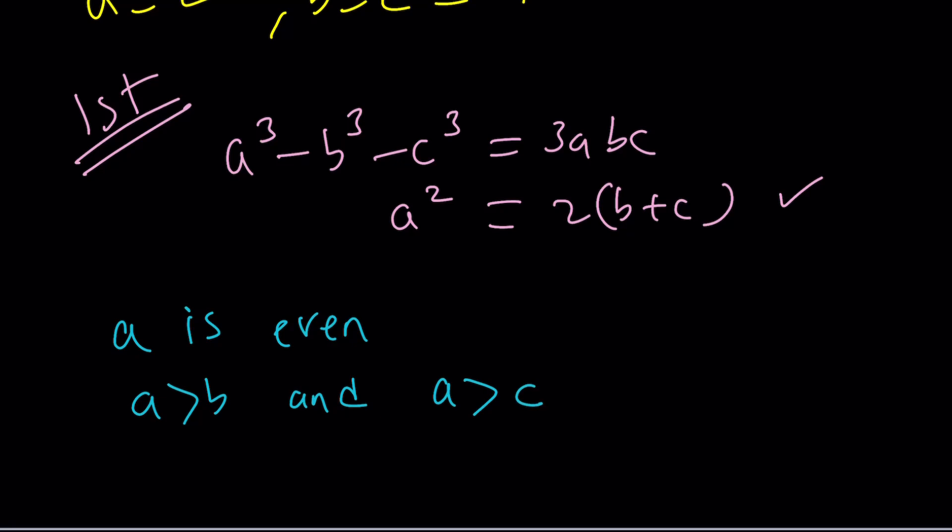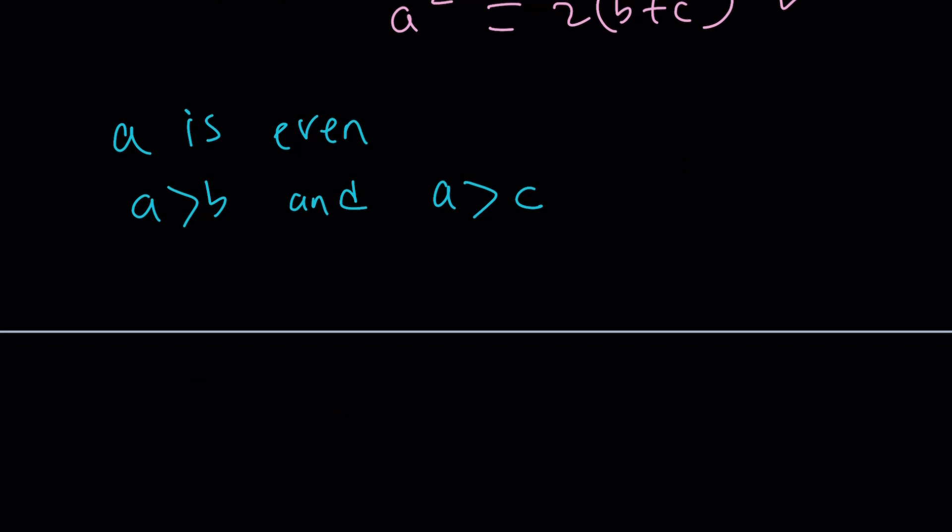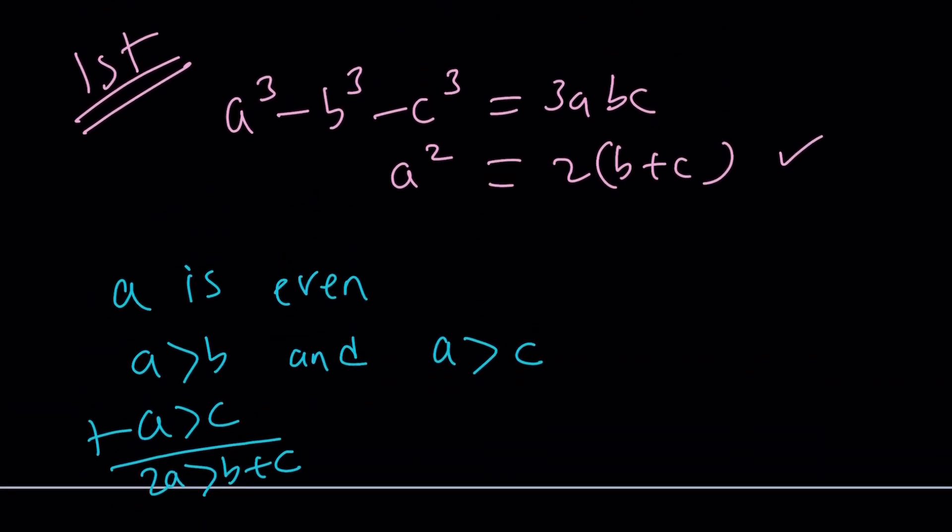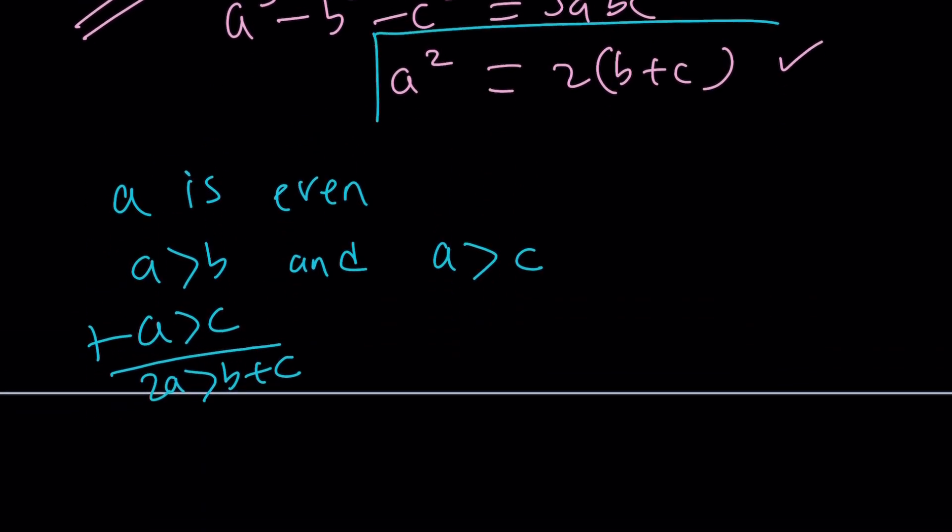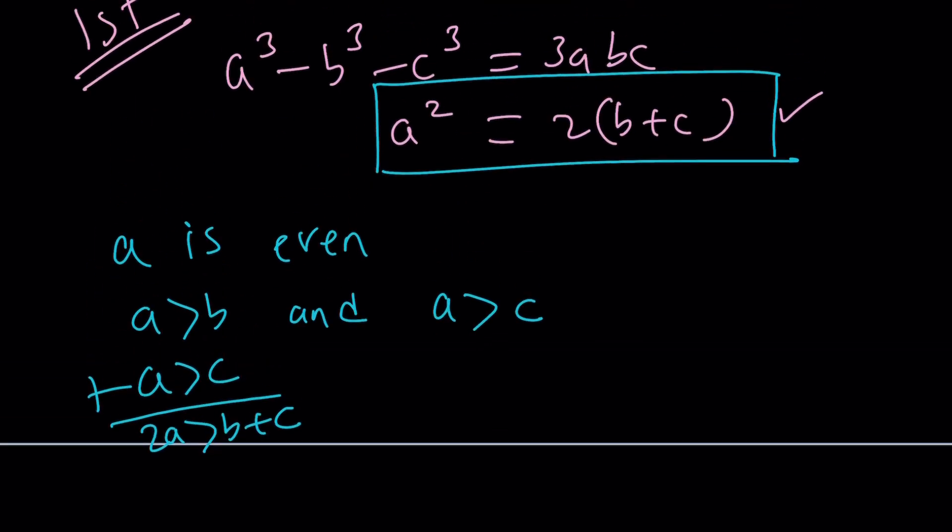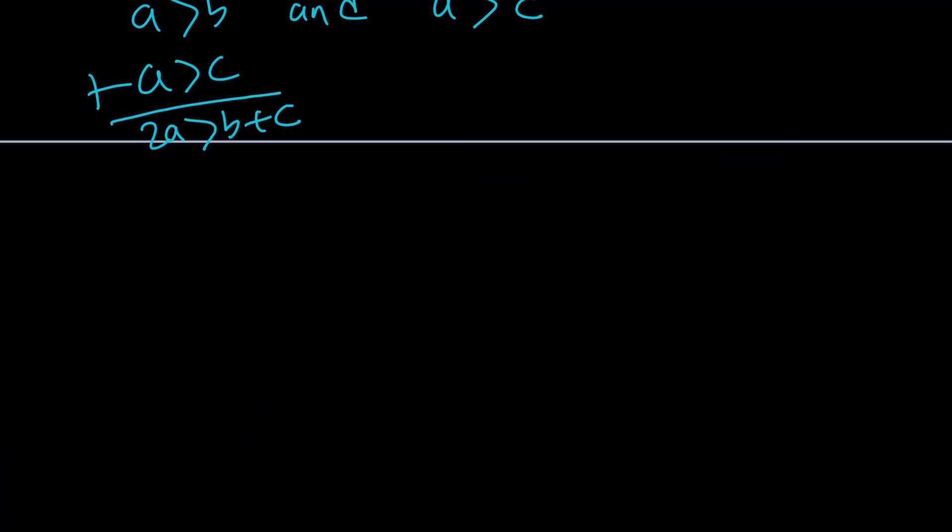And this is nice because if you put these two together and add them, this gives you 2a is greater than b plus c. That's interesting. What does that mean? How can I use that information? Here's what you can do. From the original equation, we can basically write half of a squared. And again, we used that idea before. Remember? Half of a squared is equal to b plus c. And b plus c is less than 2a.